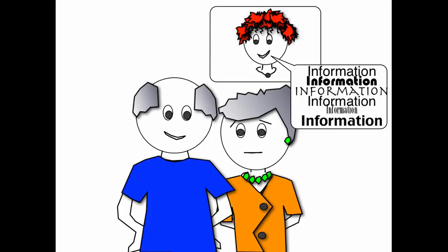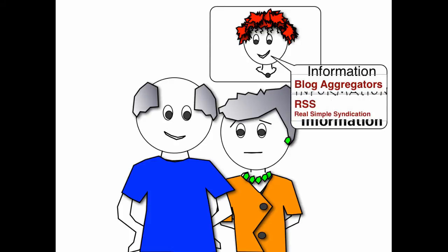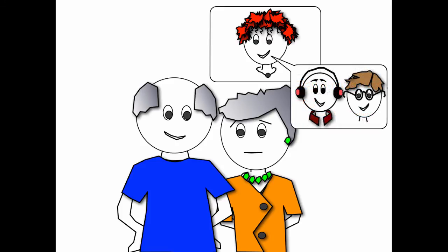For example, there are blog aggregators, or RSS feeds, that's real simple syndication, that she can use. But it is better to ask the employees what they found relevant in the links they identified prior to doing all this. She could also ask them to suggest technologies she can use to make sense of this information overload.